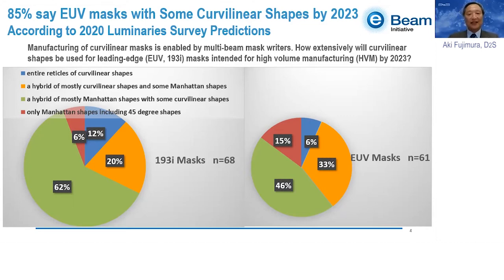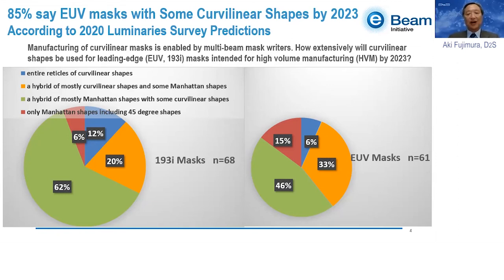On 193i, luminaries believe only 6% think only Manhattan shapes — which in this context includes 45-degree shapes — will be on the masks. An overwhelming majority believe that at least some shapes on leading-edge high-volume manufacturing masks will be curved linear.